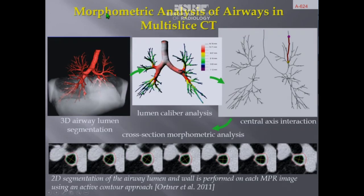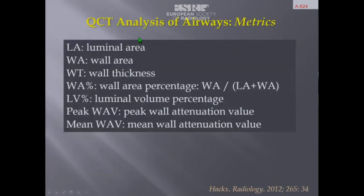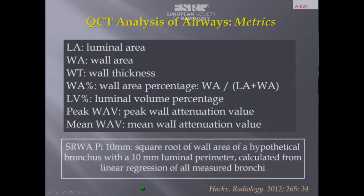Regarding bronchial wall thickening, this visual sign suffers from inter-observer variability. Several investigators have developed software platforms permitting morphometric analysis of the airways: automatic segmentation of the airway lumen, calculation of lumen area, automatic segmentation of the airway centerline, cross-sectional reformats at any bronchus, and algorithms to segment inner and outer airway contours, permitting calculation of wall area, lumen area, and wall area percent. The summary metric is the square root of wall area of a hypothetical bronchus with a 10mm luminal perimeter, calculated from linear regression of all measured bronchi (Pi10).